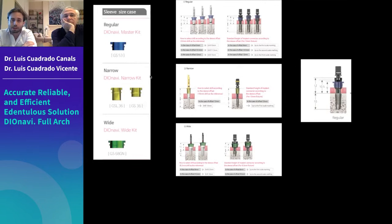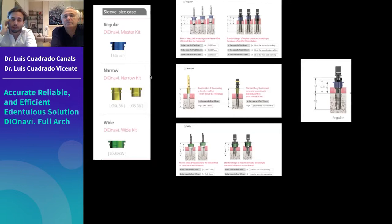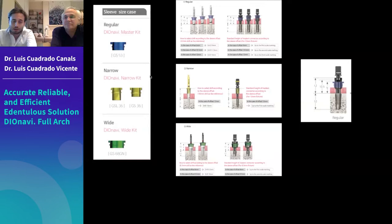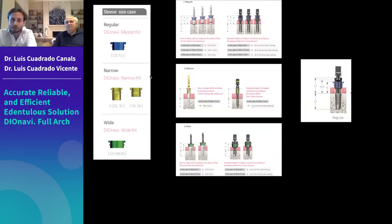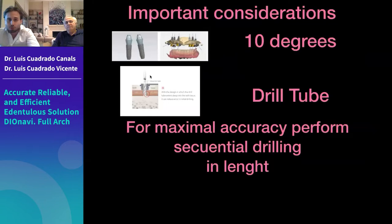The different sleeve types are available for regular, narrow, and wide implants. DIO selects the appropriate sleeves during planning — you approve the plan but don't need to choose the sleeves yourself. Offsets available for regular implants are 9, 10.5, and 12; narrow and wide have different offsets. This makes guided surgery straightforward and user-friendly for any surgeon.